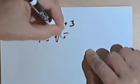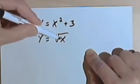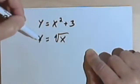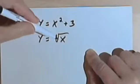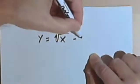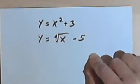Radicals. I'm not allowed to have a variable underneath a radical sign, so I can't have y equals the square root of x, let's say, minus 5.